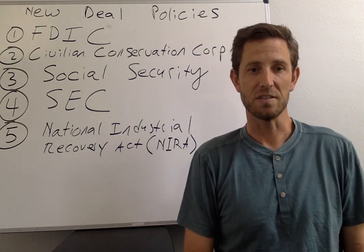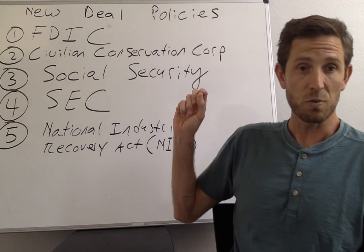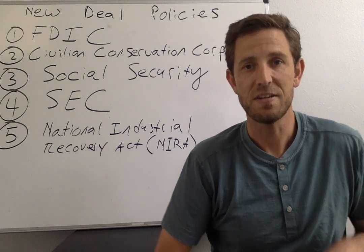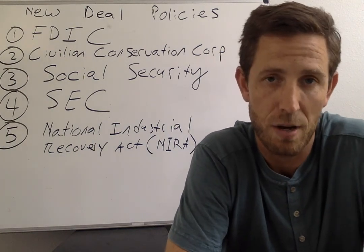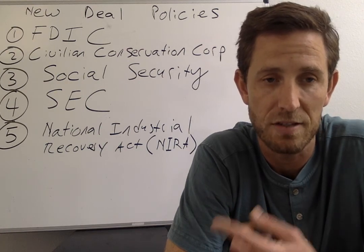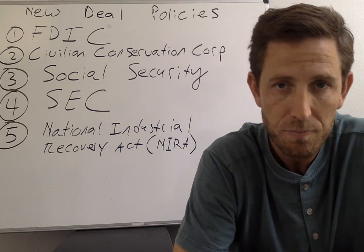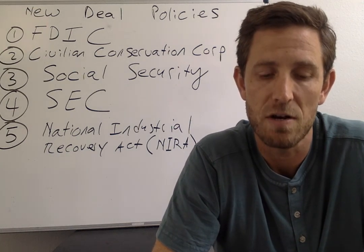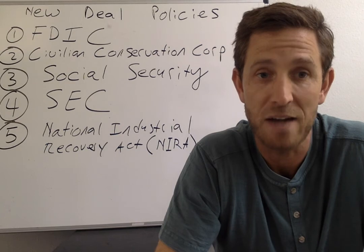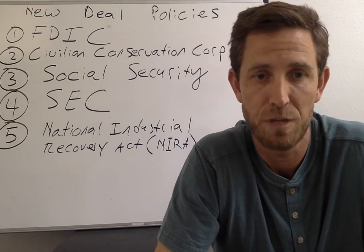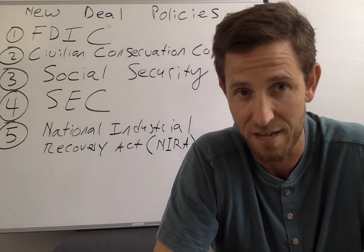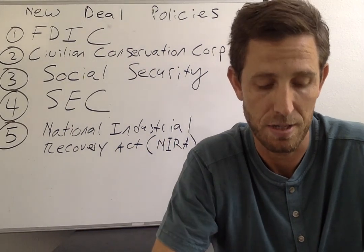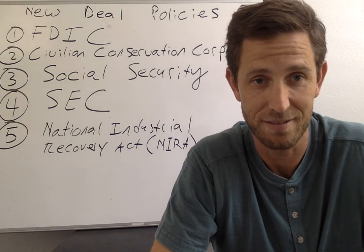So what were some New Deal policies under FDR? The first one is the creation of the FDIC — the Federal Deposit Insurance Corporation — and this is related to banking. Think back to the previous module: one of the big problems and causes of the Great Depression was bank runs and bank panics, in which people would lose confidence that their money was safe and rush to withdraw it.